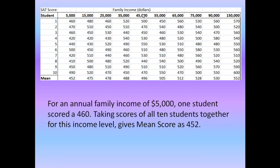Similarly, let's take the family income of $45,000. Again one student would score 500, the other would score 470, and if we take the mean of all 10 students we get a mean of 496. In my next video I will explain how to form a population regression line using this data set. Thank you.